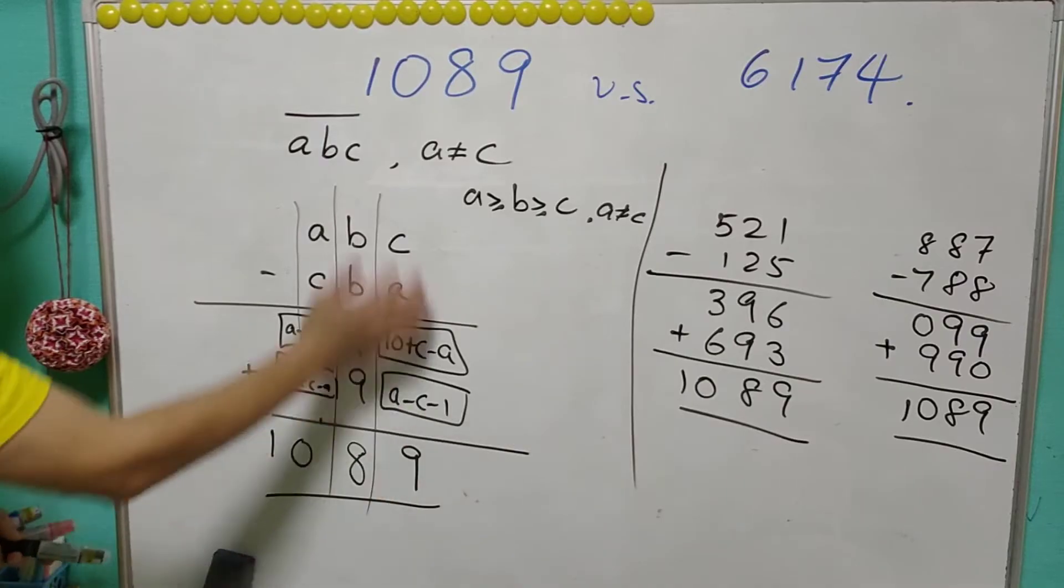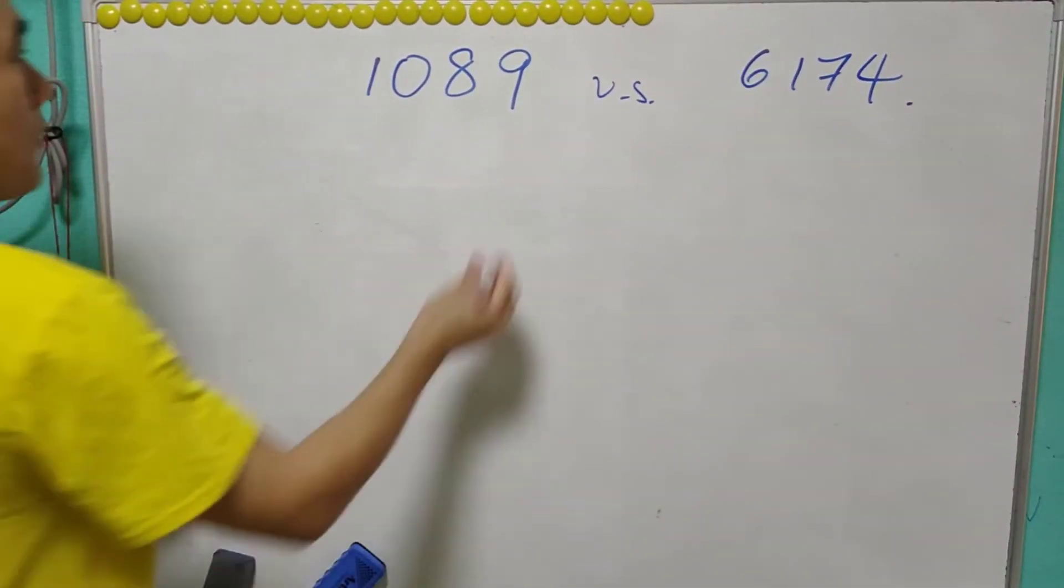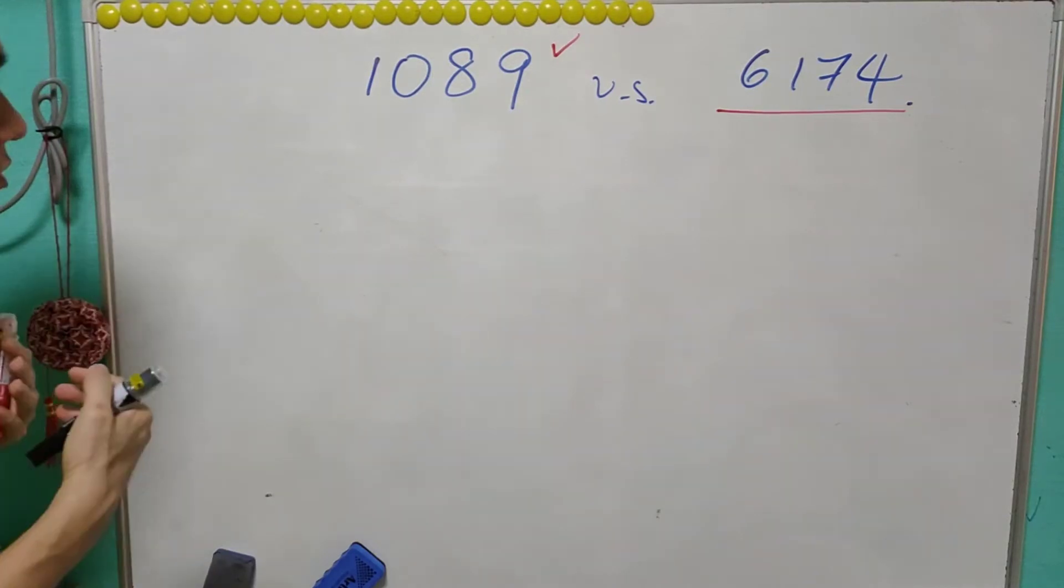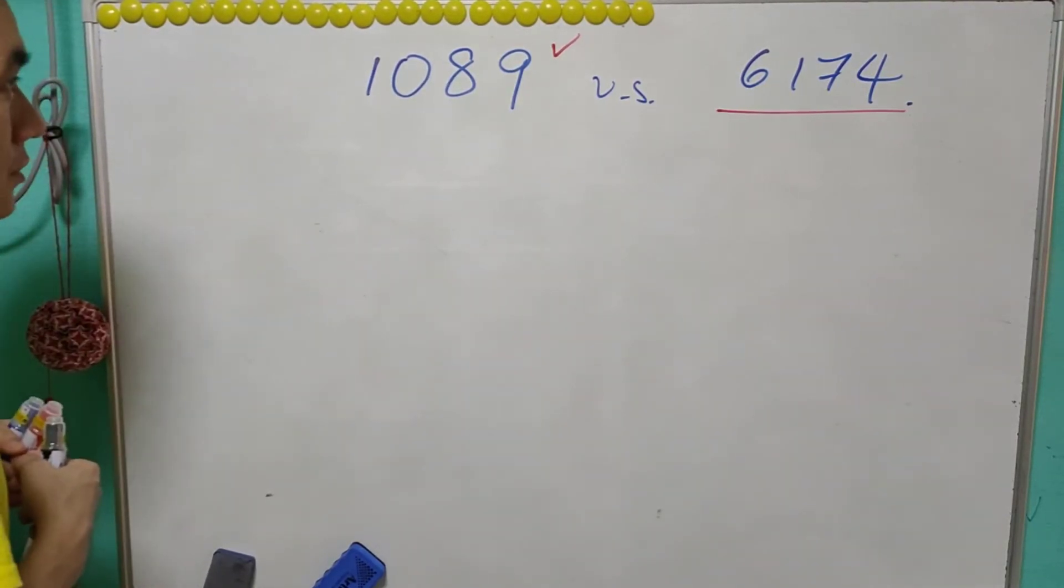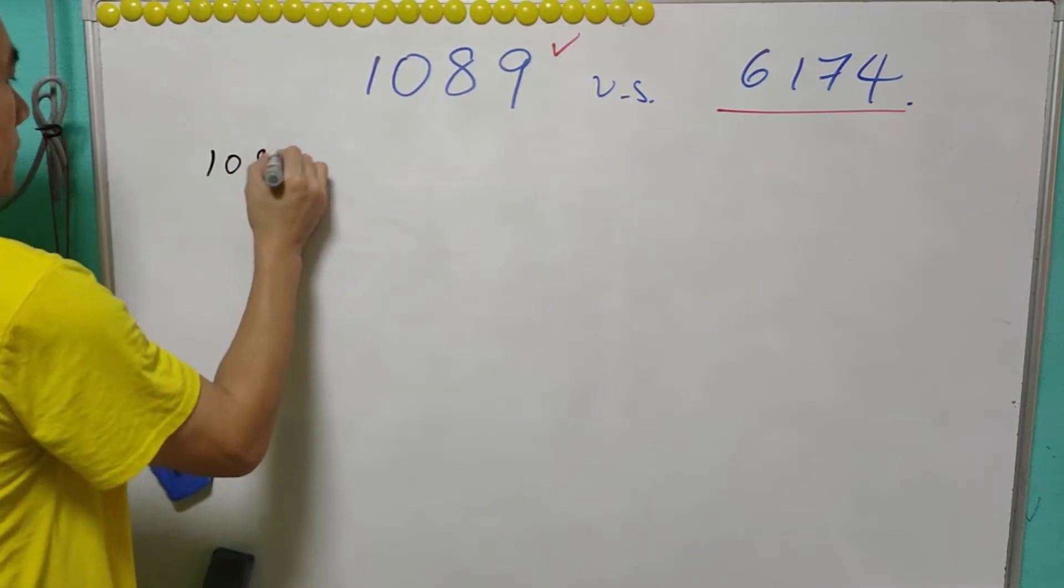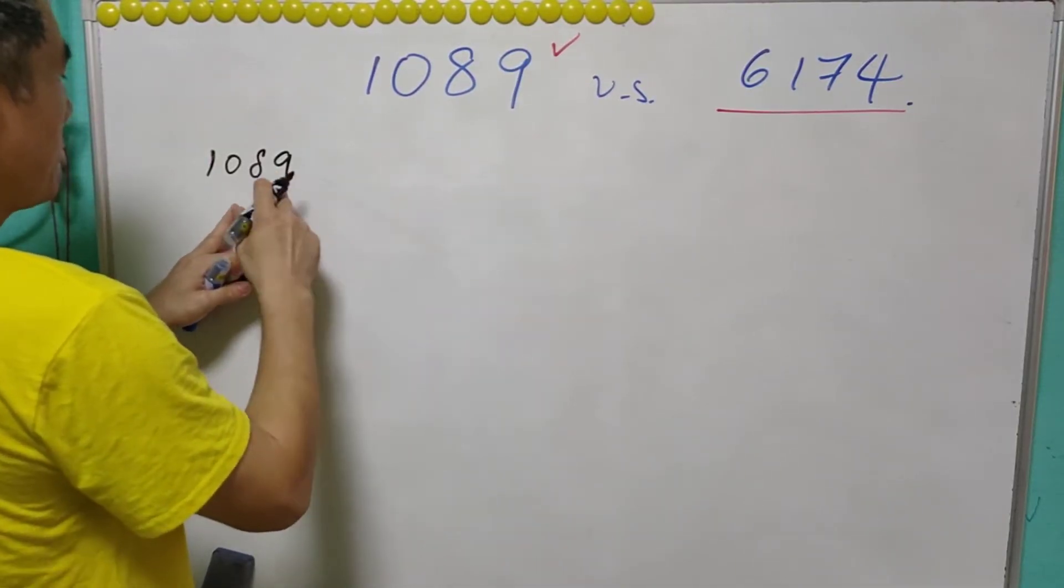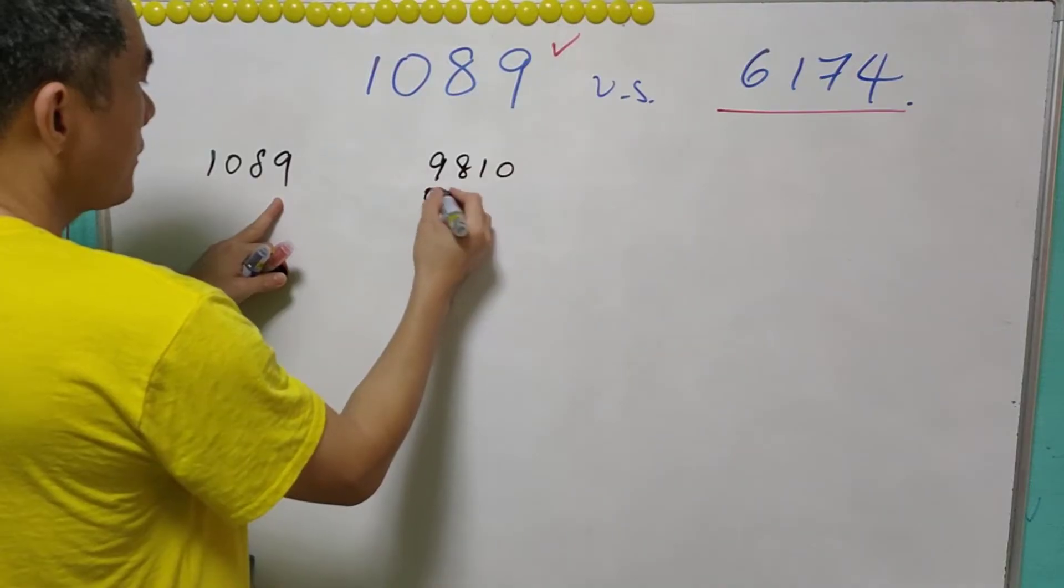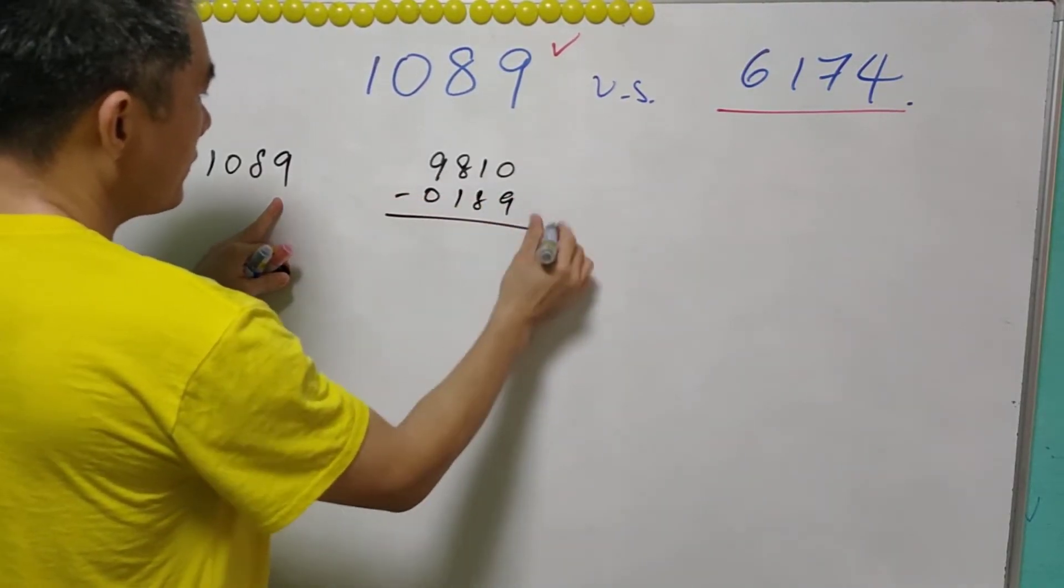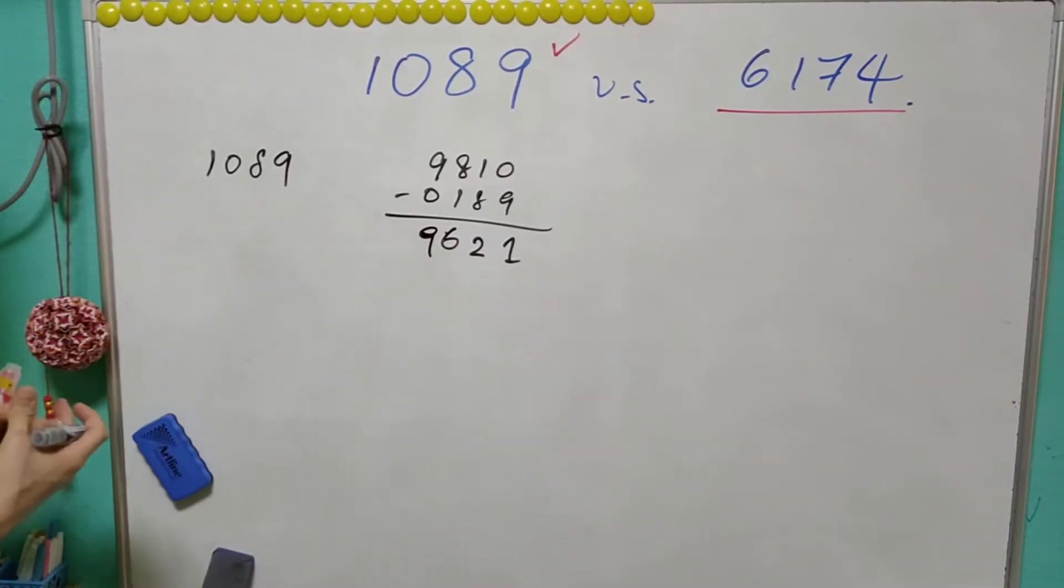For the case 1089, now we look at 6174. We start with any 4 digit number which are not all the same digits. Let's say we have this 1089. We can arrange this 4 digit number so that you can have the largest: 9810, and the smallest: 0189. We take the difference: this is 9621.